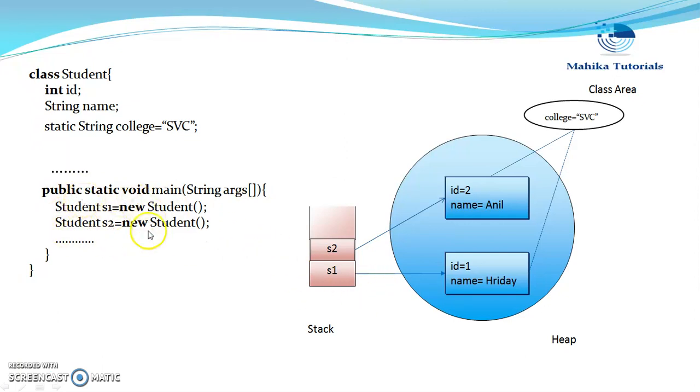So these reference variables S1 and S2 are local to this main method. So they will go to stack but this instance variable will get memory from heap. S1 will have its own id and name.